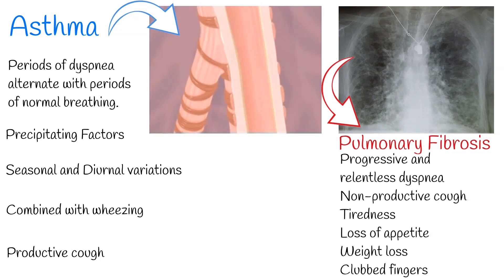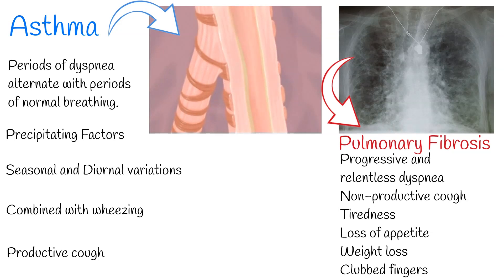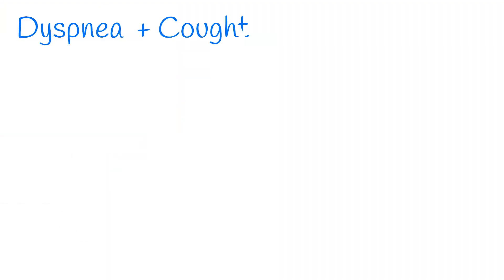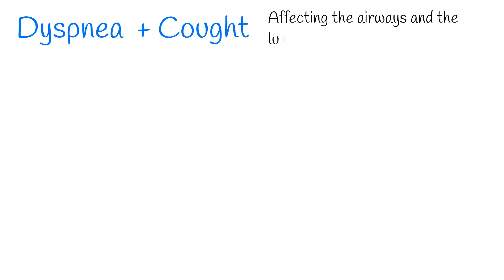Dyspnea frequently is combined with other symptoms, and it is crucial to consider accompanying symptoms, as they will help to define the underlying cause of dyspnea. For example, if dyspnea is accompanied with cough, you should think the disease is affecting the airways and the lung parenchyma.